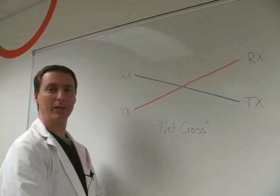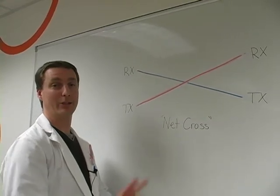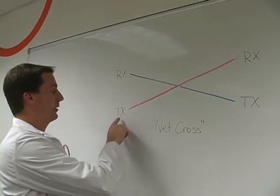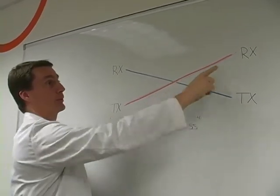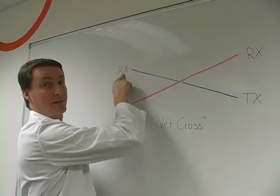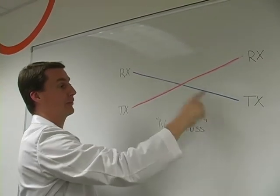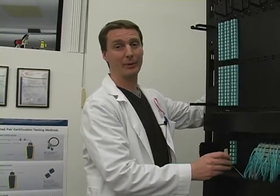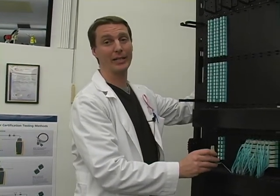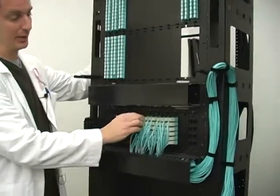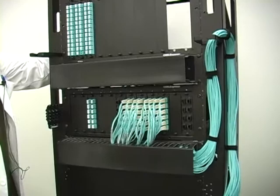When transceivers and networking equipment need to talk, the pathway is very simple. We have a transmit that goes to a receive and a transmit that goes to the receive. But what we end up with is a net cross. However, this seemingly simple pathway can get very complicated when you implement multiple connections in a structured cabling system that works with multiple patch panels.